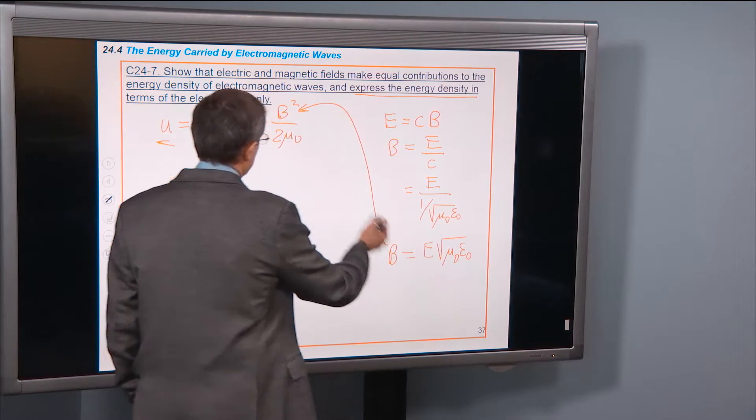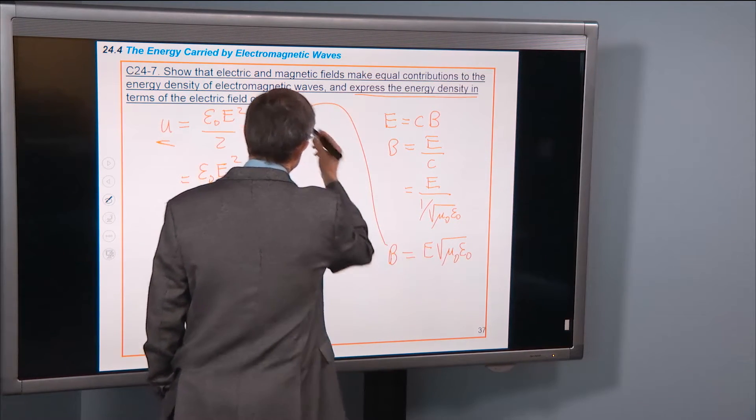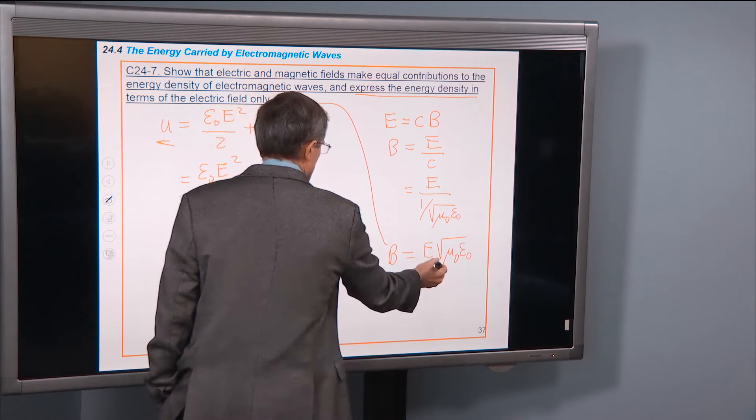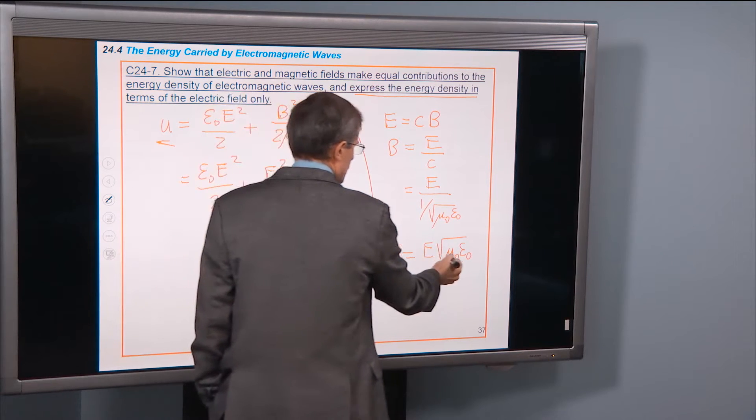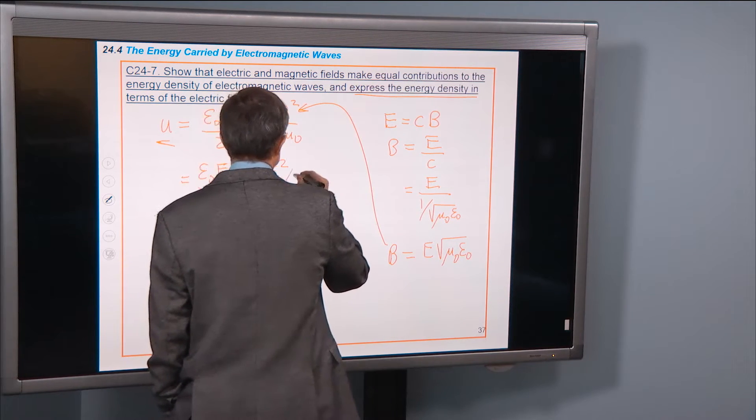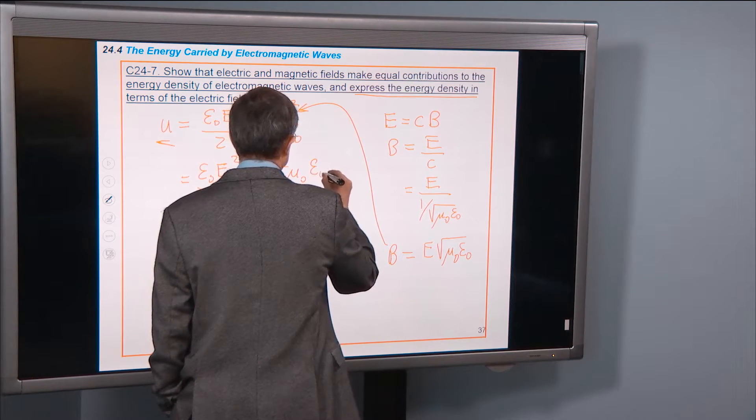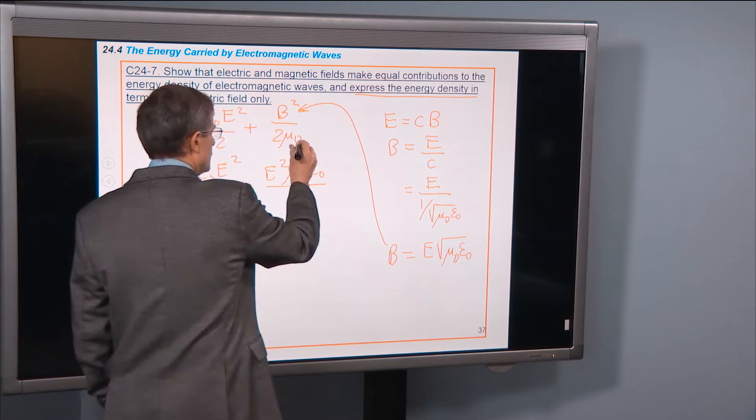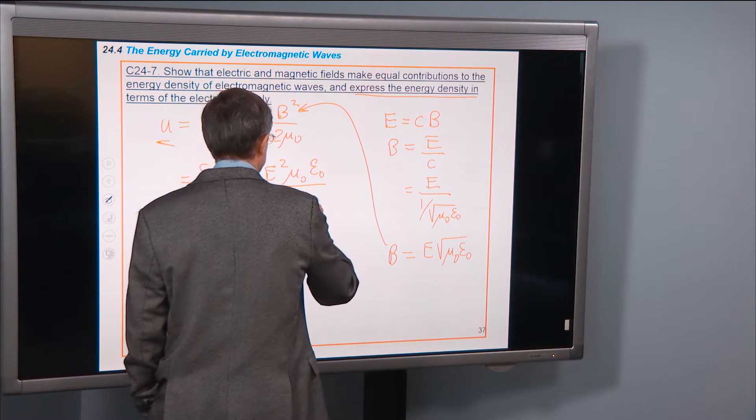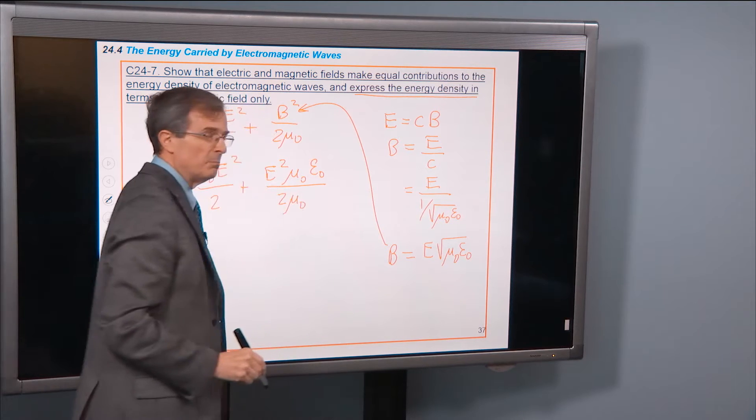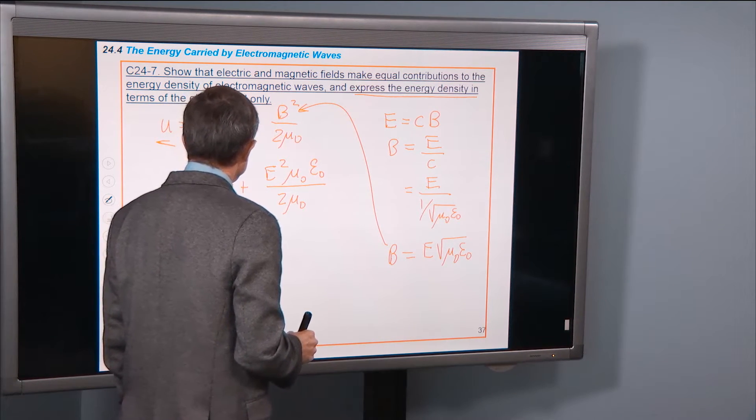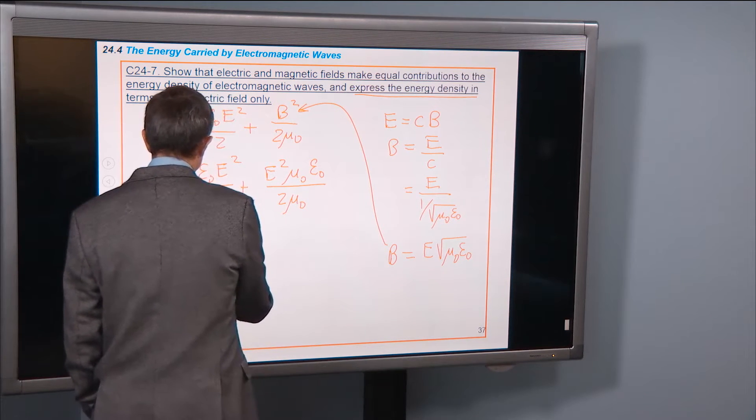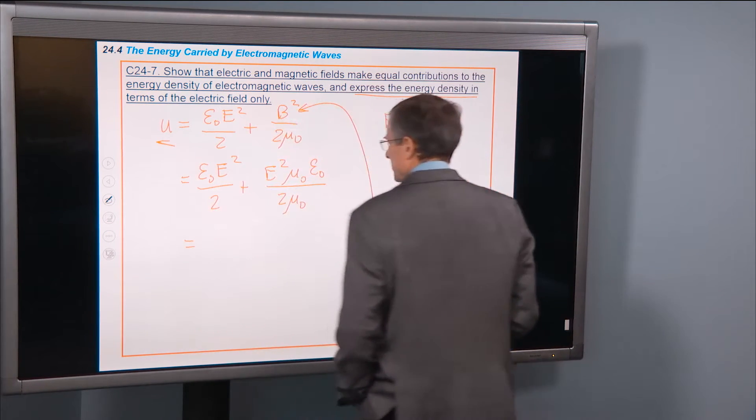I want to put this b in here, but I want to square it. So I'm going to square the e. And I'm going to square this μ0ε0. And then I have two μ0 in the denominator that comes along for the ride. All right, do we get some cancellations? Well, we sure do.